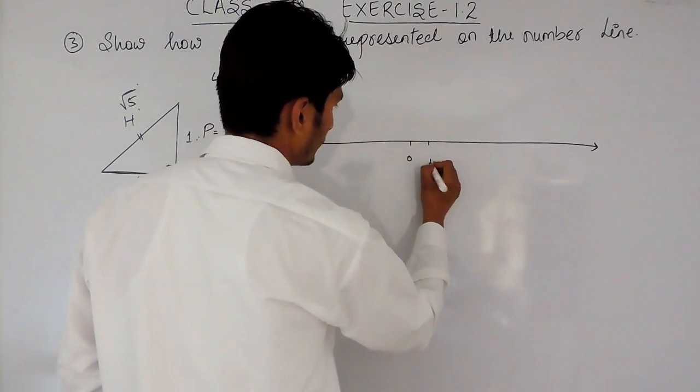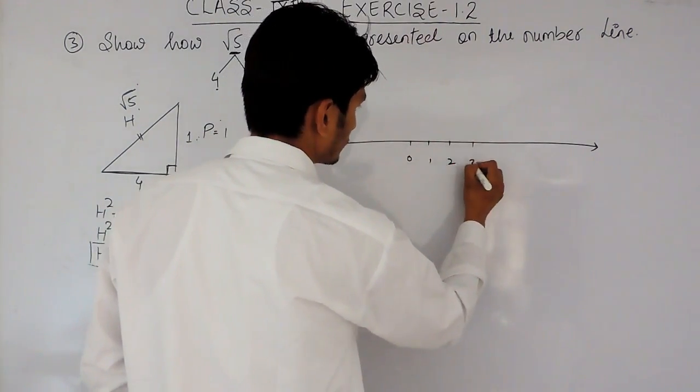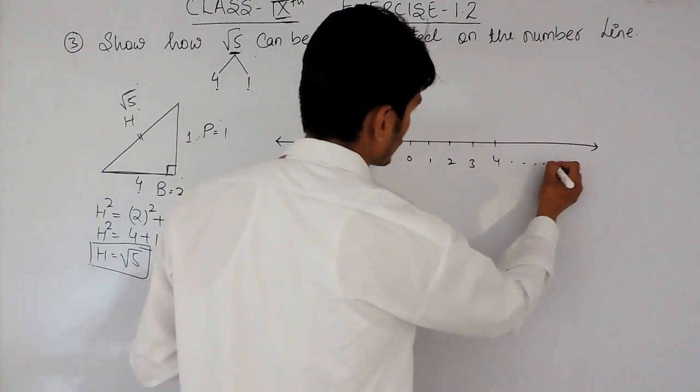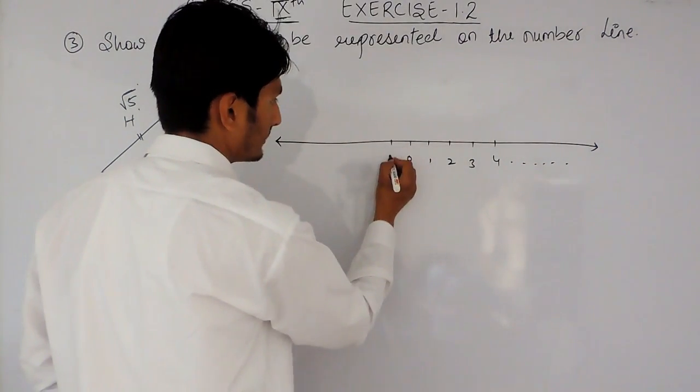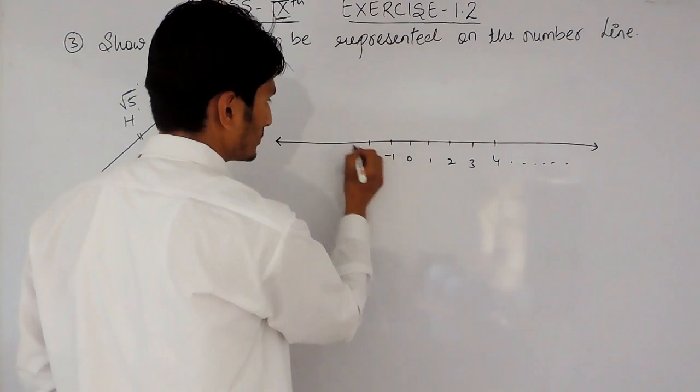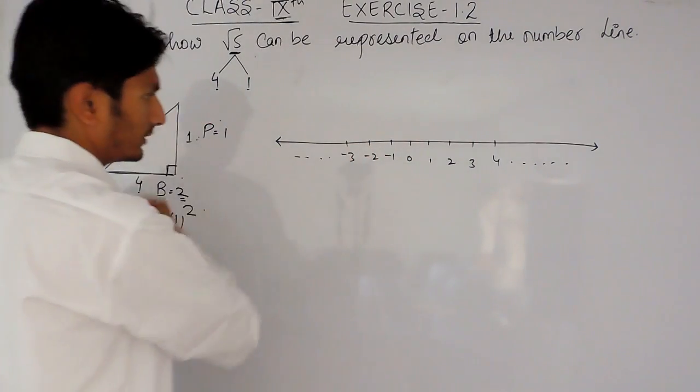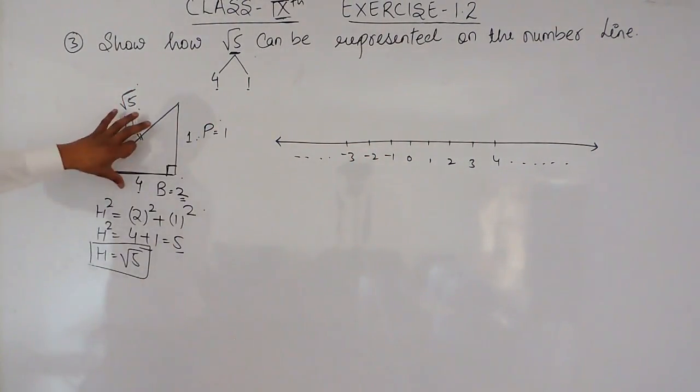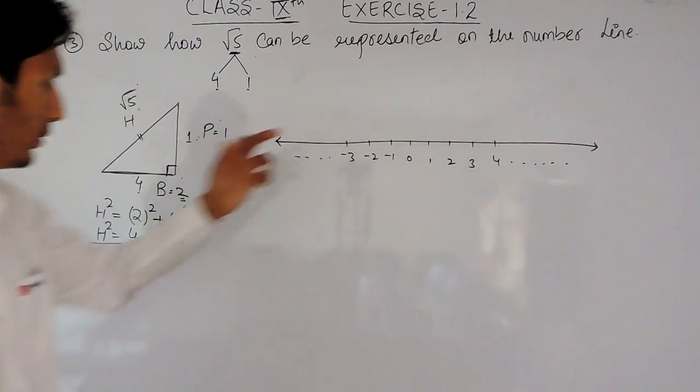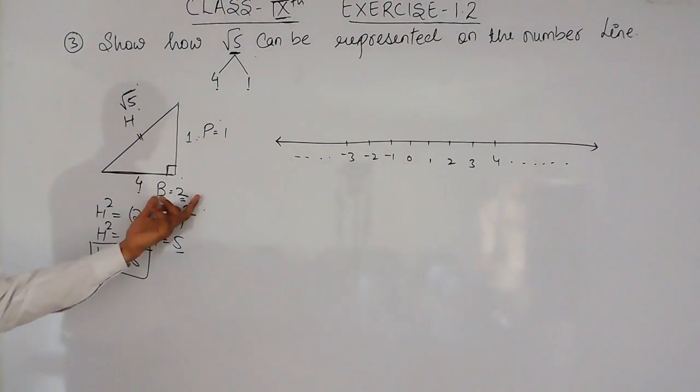This is 0, this is 1, this is 2, this is 3, this is 4 and so on. And on the left-hand side, there will be minus 1, minus 2, minus 3 and so on. Now, same triangle I have to form here, where the base is equal to 2 cm or you can say 2 units. So,